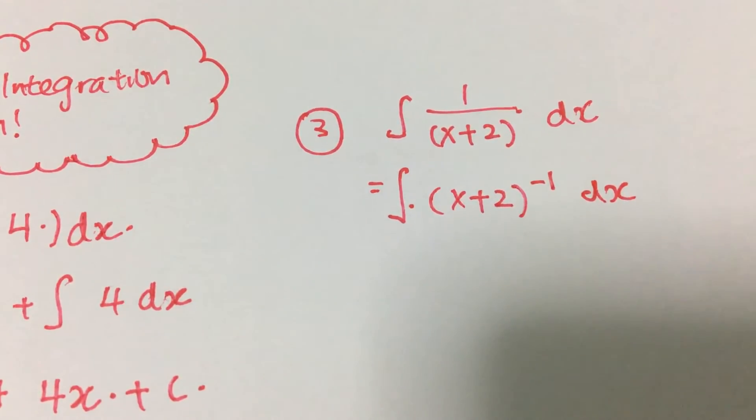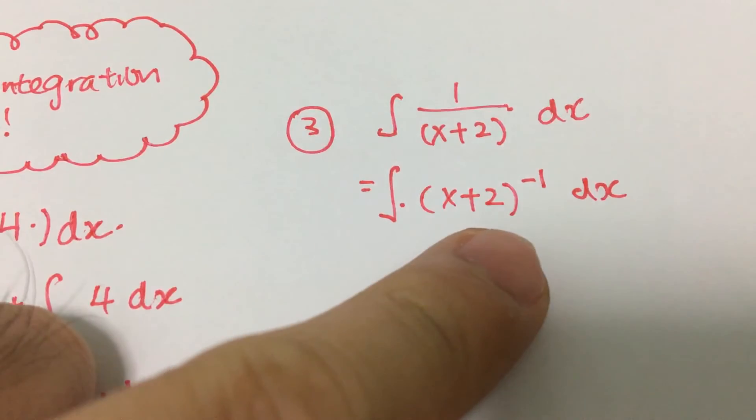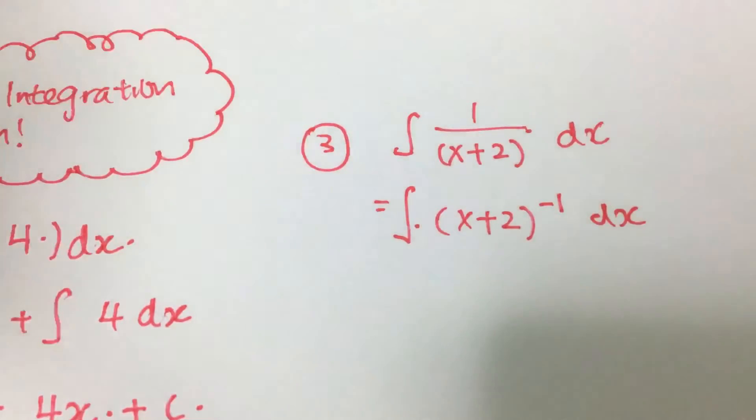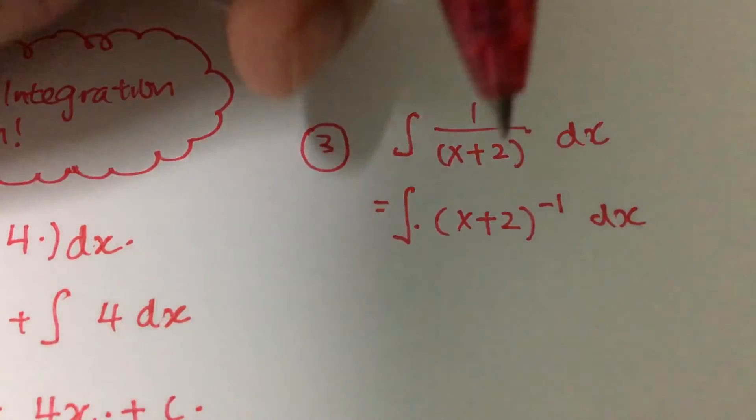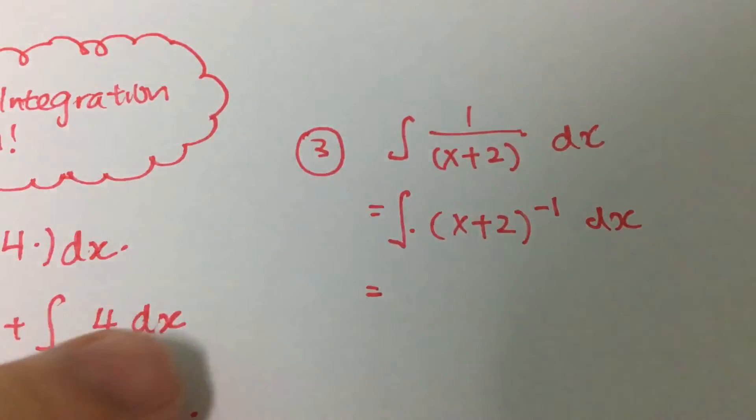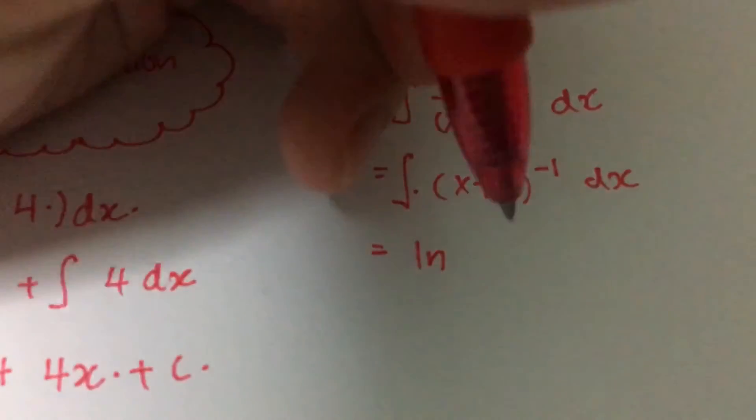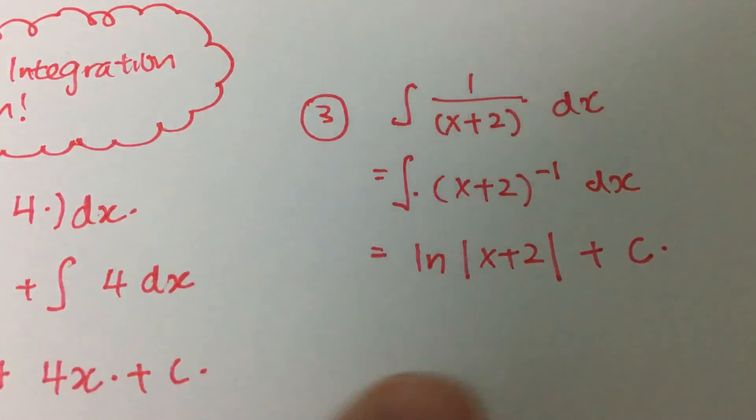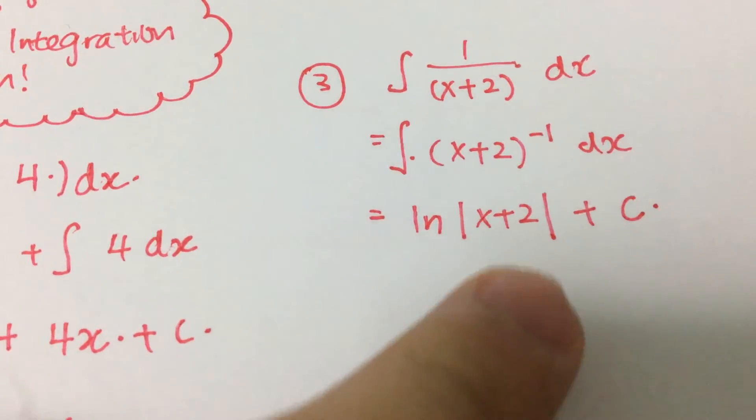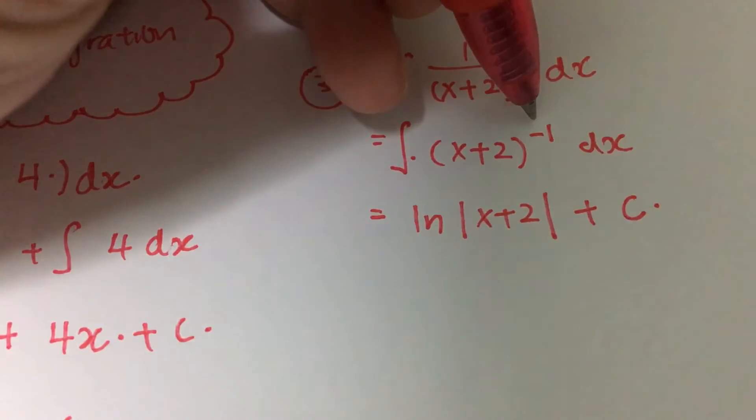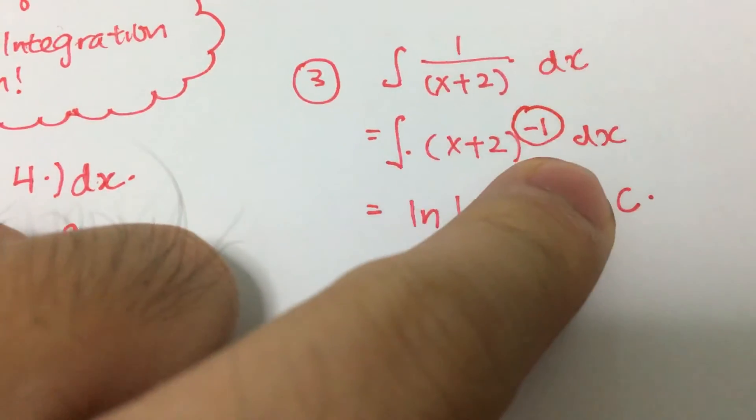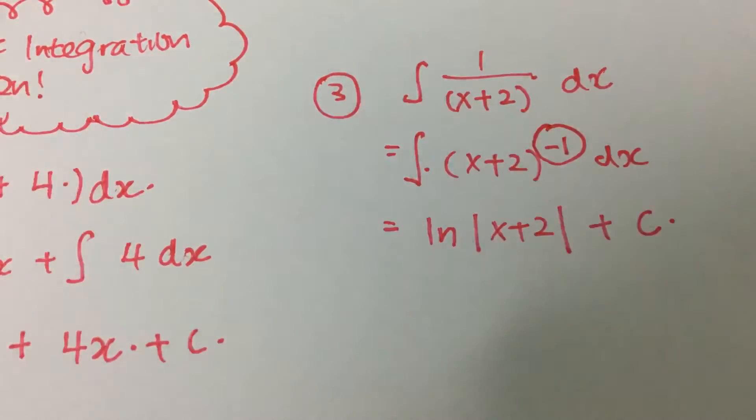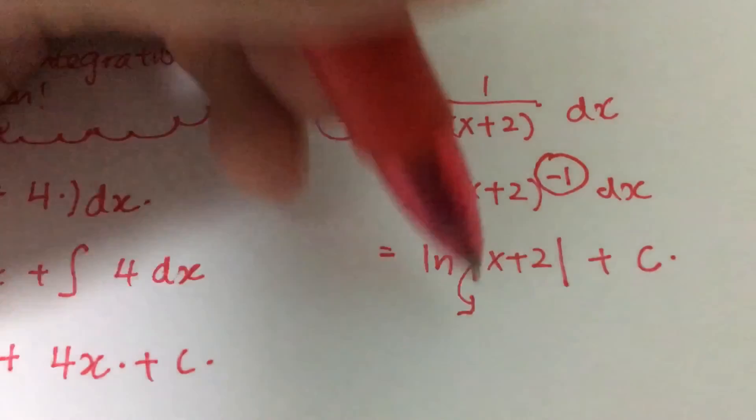You have to remember this: any terms or equations that has a power of negative 1, when you integrate it, you will actually get back log. For this example, you actually get back log modulus x plus 2 plus c. This is the answer. Here's a small trick: as long as the power is negative 1, when you integrate back it equals log itself.